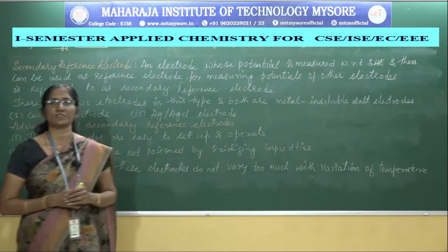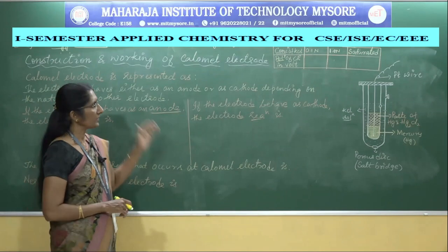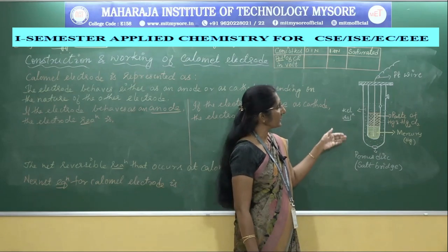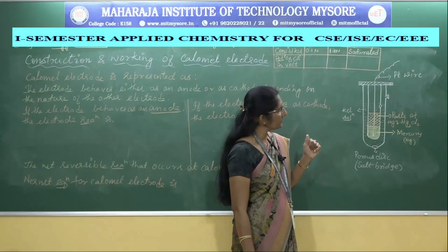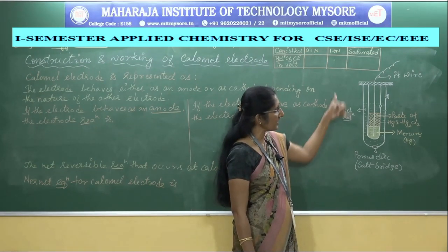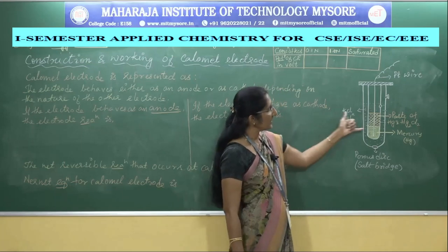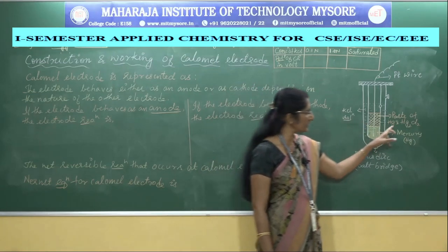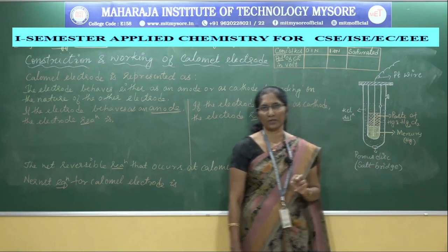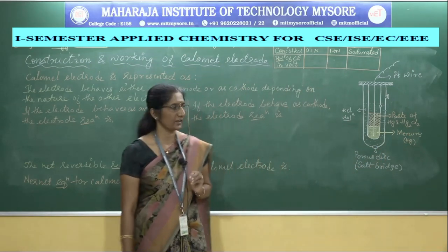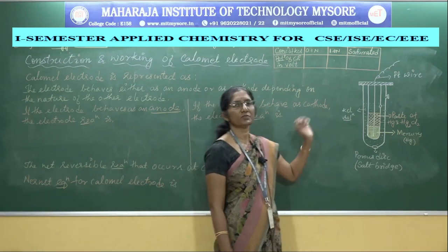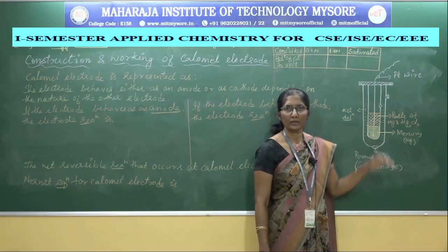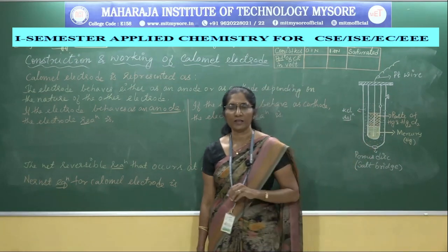Now let us discuss the construction and working of the calomel electrode. Hg₂Cl₂ is known as mercurous chloride. Commercially it is known as calomel, which is why this electrode is called the calomel electrode.